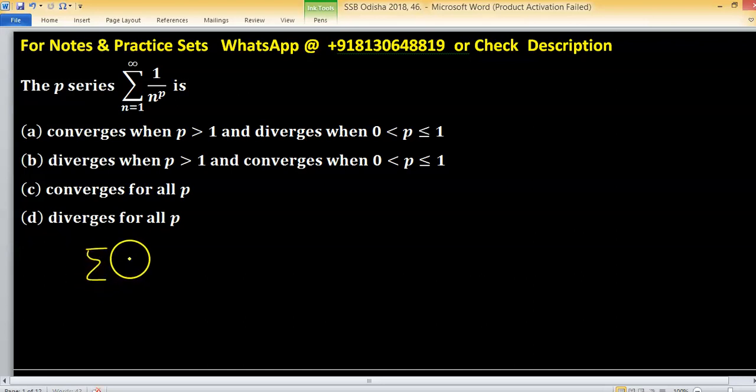A series is said to be a p-series if it is in the format 1 upon n raised to the power p. This series is convergent only when p is greater than 1, and divergent when p is less than or equal to 1.